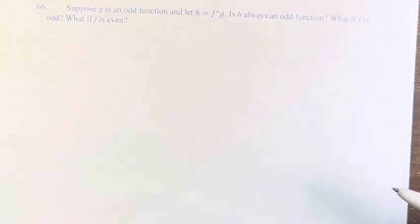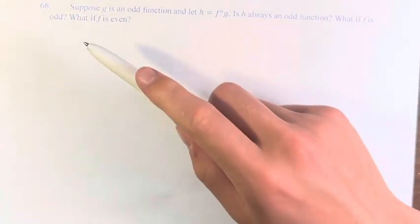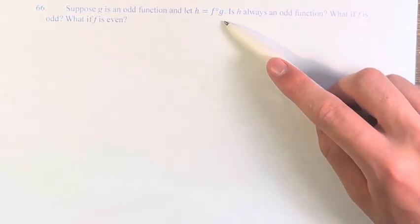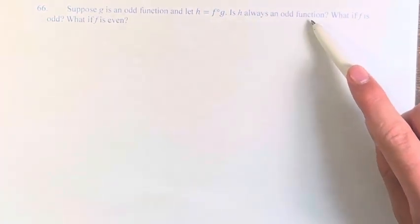Hello and welcome back to another video. In this problem we're asked to suppose that g is an odd function and let h equal f of g. Is h always an odd function? What if f is odd and what if f is even?